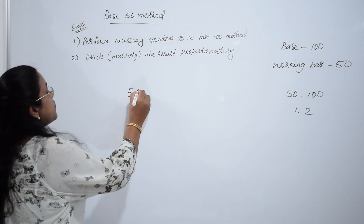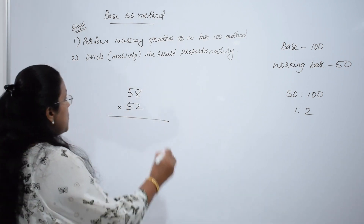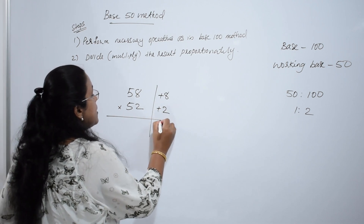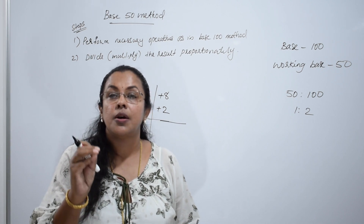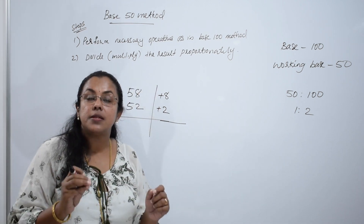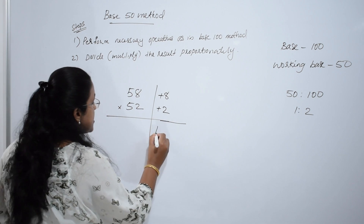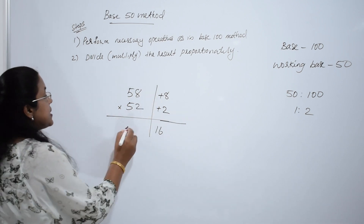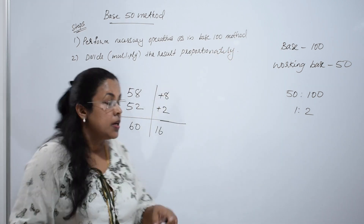I am going to multiply 58 and 52. 58 is 8 more than 50 and 52 is 2 more than 50. Proceed the operation as in the base 100 method. First, multiply vertically: 8 twos are 16, write 16 here. Now add diagonally: 52 plus 8 is 60. Now, what is the second step? Divide or multiply the result proportionately.